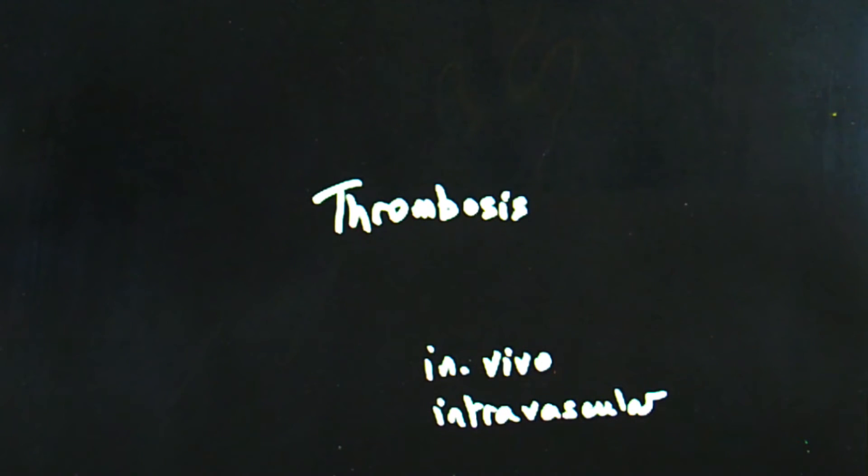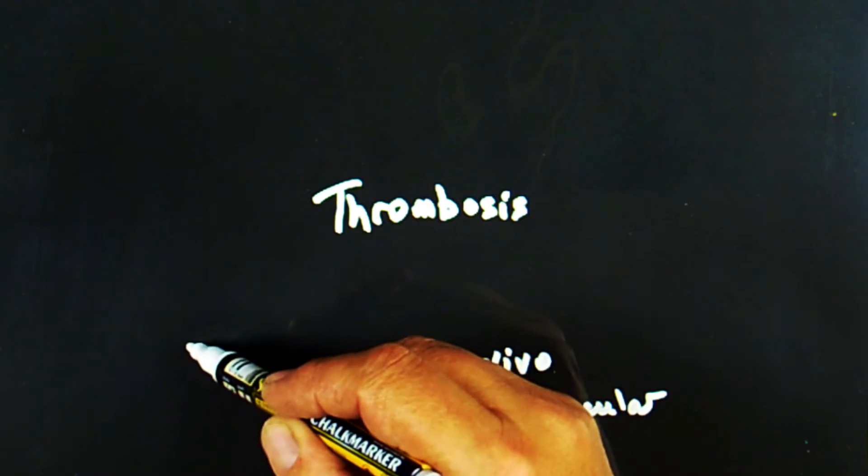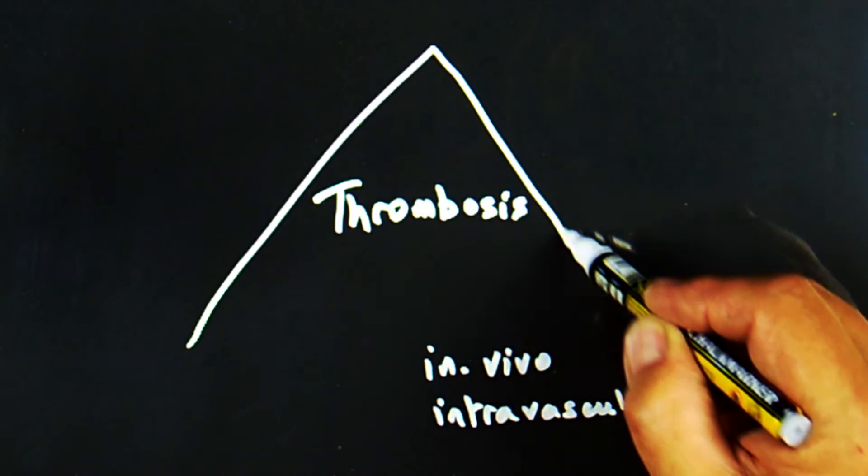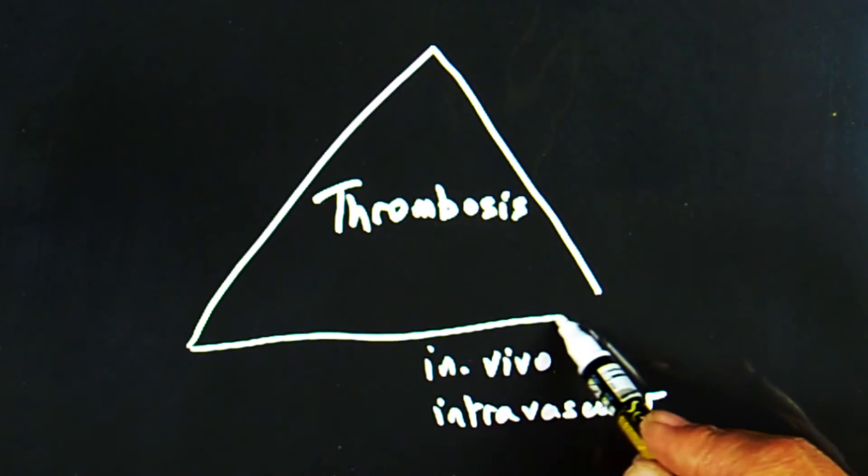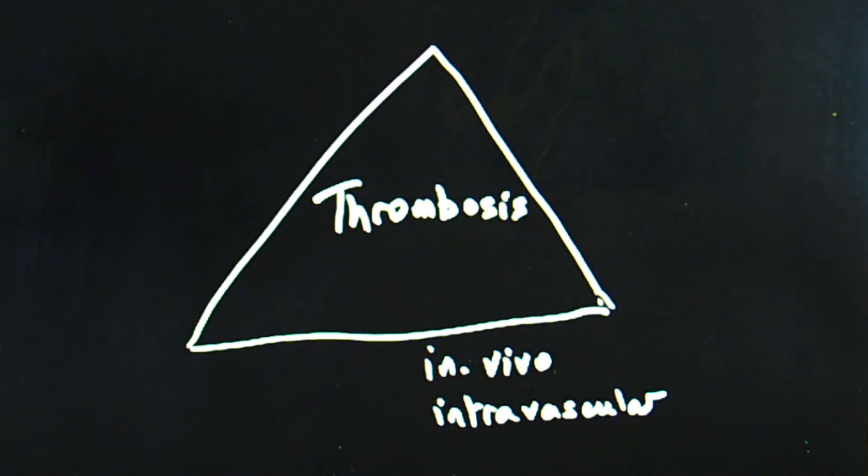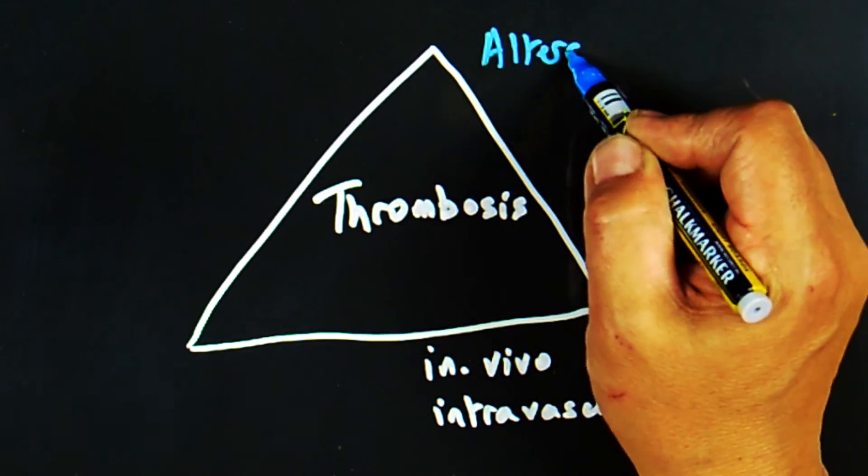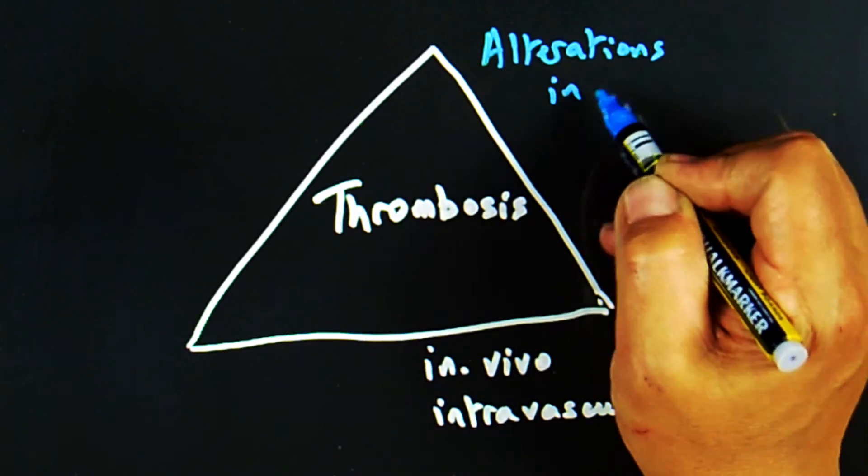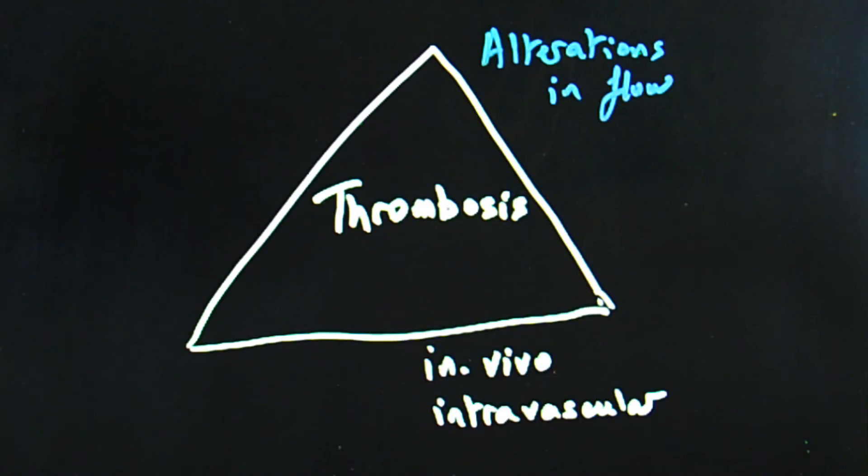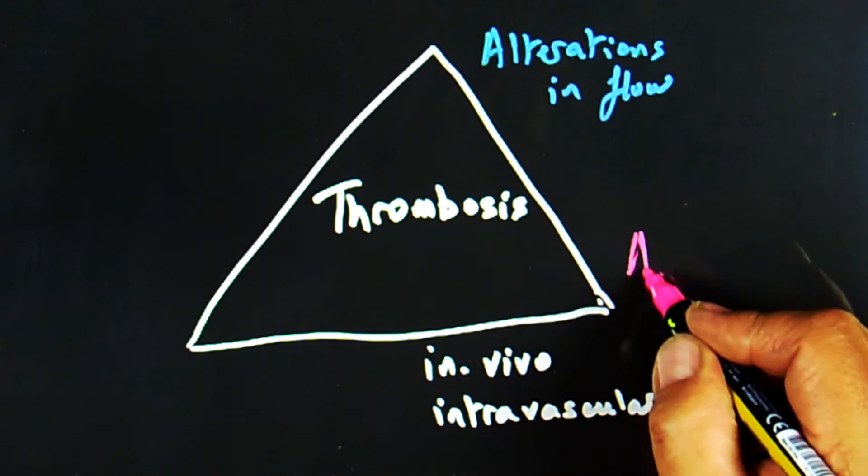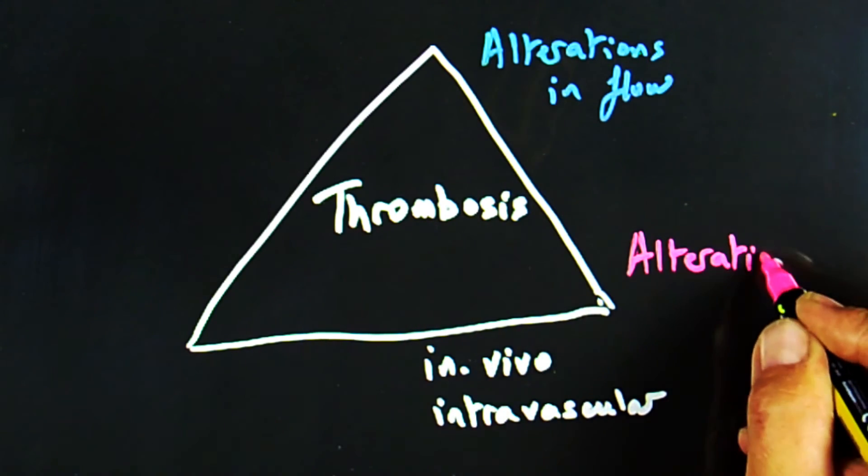In terms of the factors which potentiate thrombosis, these can be described by what's known as Virchow's triad. Let's represent that as a triangle around the term thrombosis, and the three factors are firstly, alterations in the flow of blood.